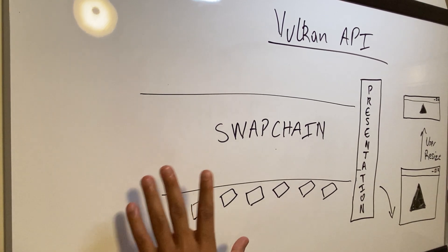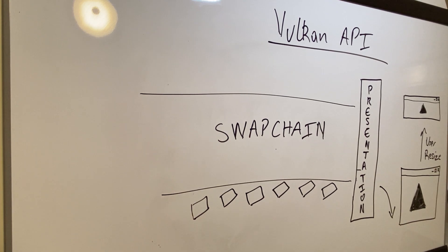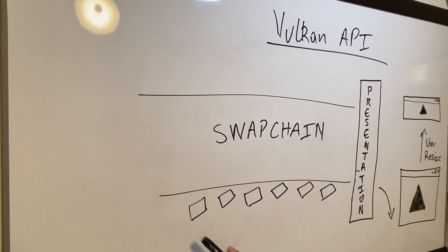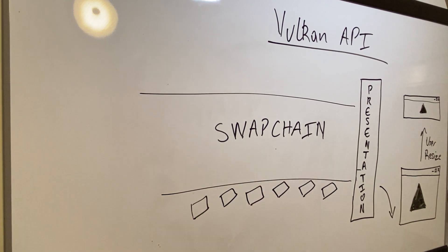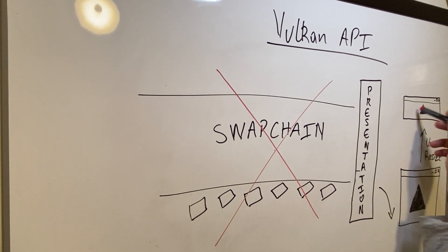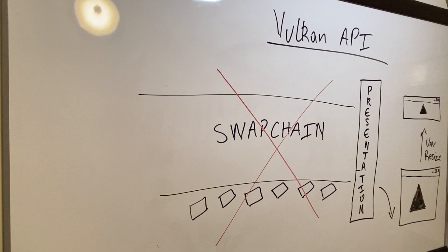Initially we have a swap chain which in previous tutorials I've discussed is a series of images lined up in a queue waiting to be presented to the screen. Upon resizing this window, all of a sudden this swap chain is no longer valid. So what you're going to have to do is destroy this swap chain and create a new swap chain that has images for this triangle that can fit into this window.